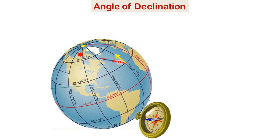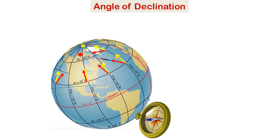Here this red line represents the direction of the magnetic north whereas the yellow line represents the geographical north, and the angle between these two lines is the angle of declination. You can see that the angle of declination is different at different points on the globe, and it is maximum at a point between the magnetic north and the geographic north.